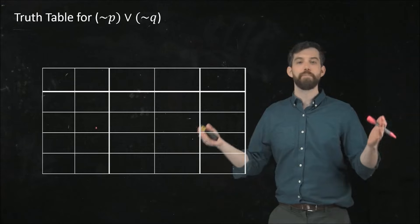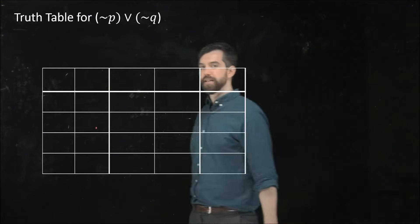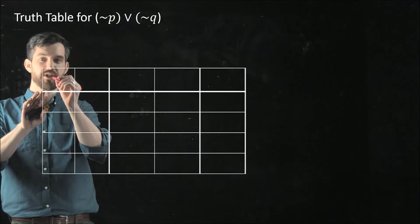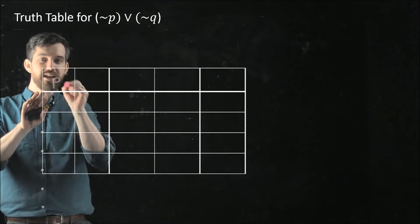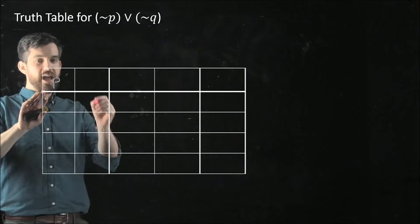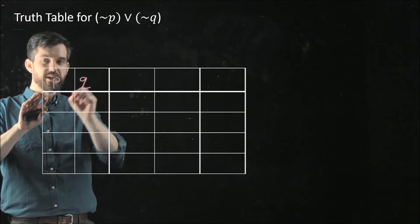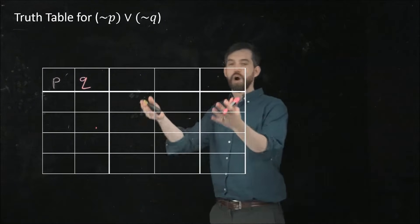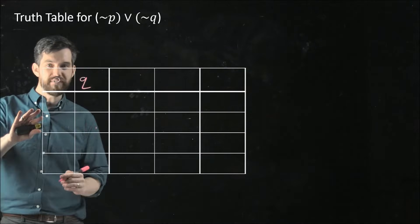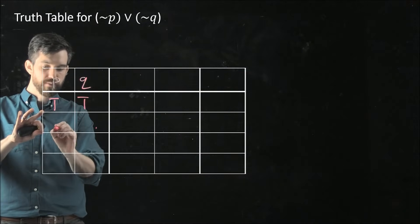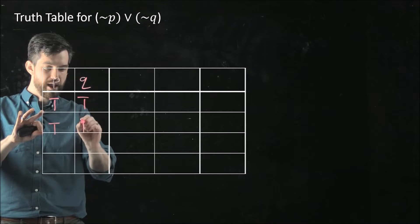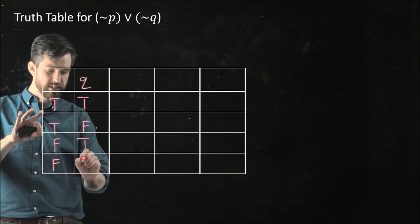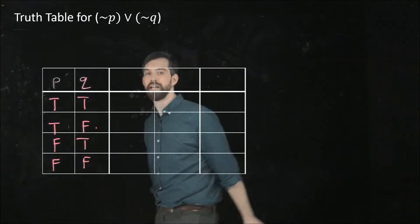You'll notice it's going to be a bit bigger than last time. Going way off to the left, we're going to have the same sort of beginning parts. I want to have an initial input variable P and another initial input Q, the same two inputs we've had before. I can go down and fill out the different possibilities exactly as we've done before: true and true, true and false, false and true, and false and false.